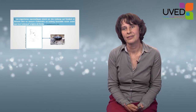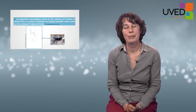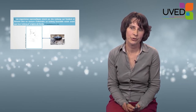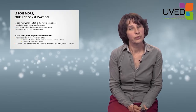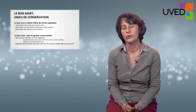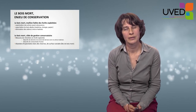Saproxilic organisms need dead wood as a substrate, which is not very abundant in managed forests. A bit like polar bears endangered by melting ice, these organisms are endangered because they must be able to reach a neighboring iceberg — another location of dead wood — before their iceberg has melted. In conclusion, dead wood is very important for biodiversity preservation, and it is a weak link in our managed forests.